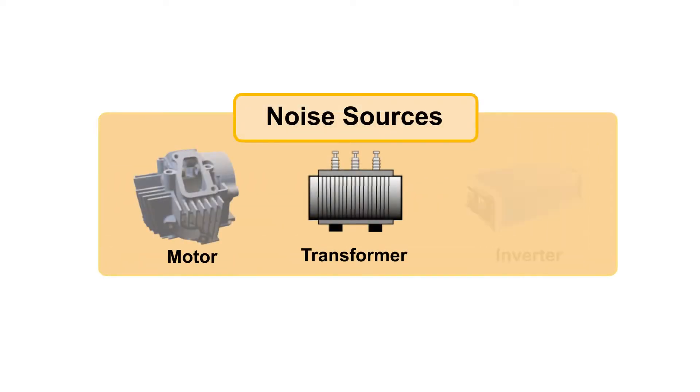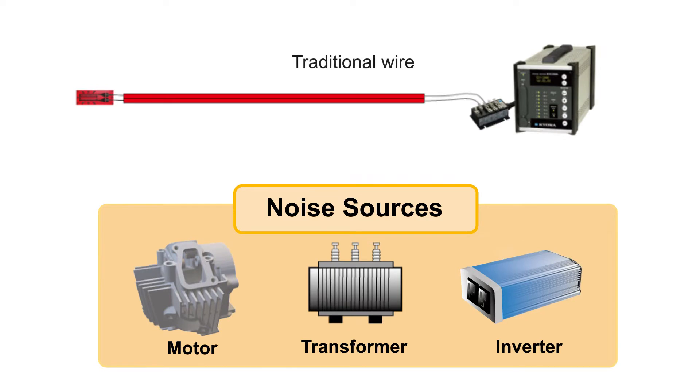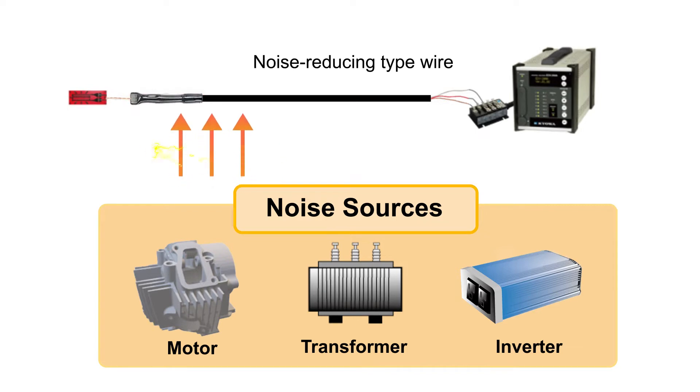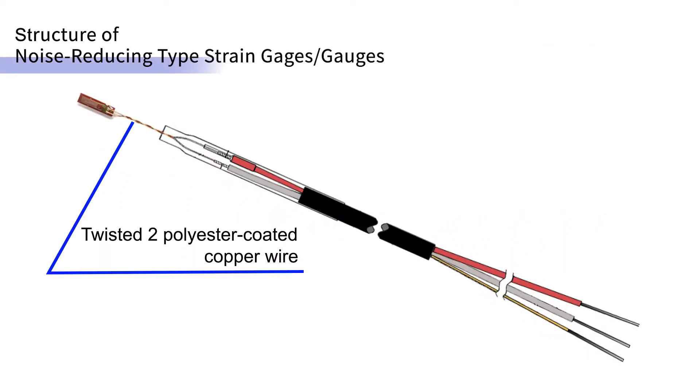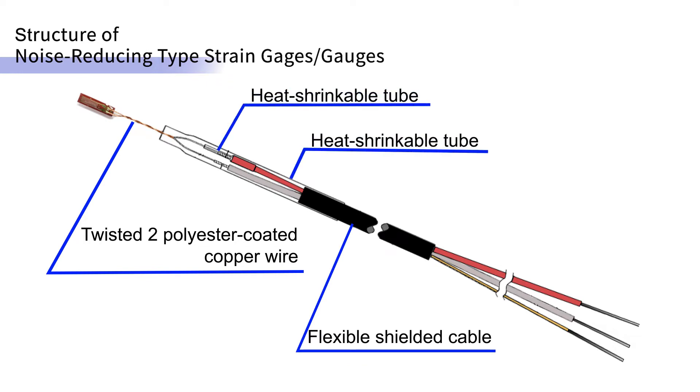Electrical noise can be generated from a number of sources through induction. This can affect the wiring of your strain gauge measurement point. KYOWA's noise-reducing strain gauge uses twisted twin-core polyester-coated wire with a flexible shielded cable.